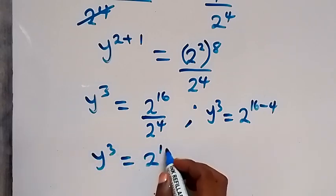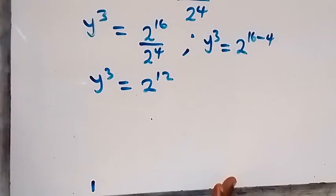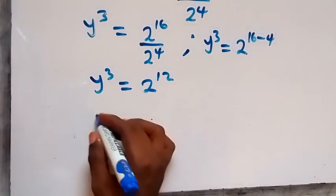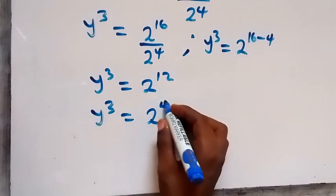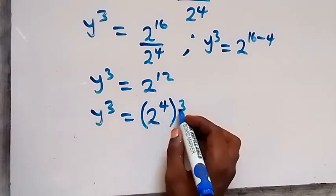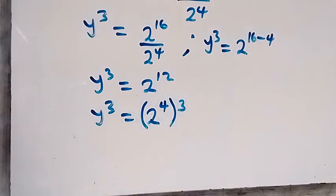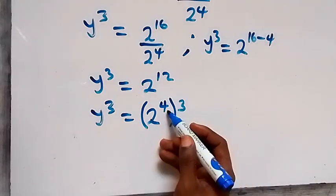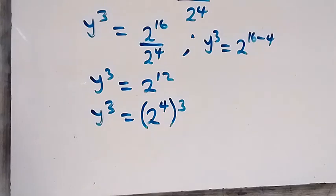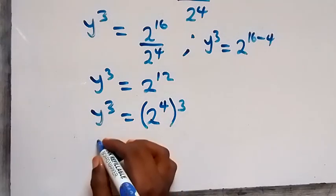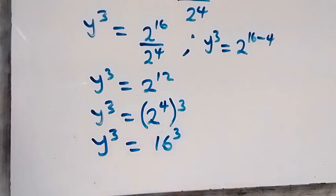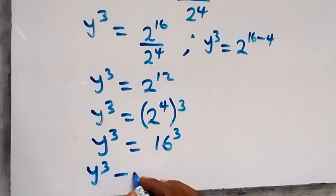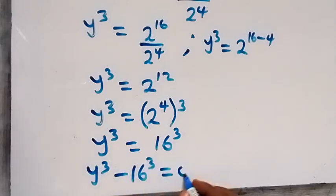We can also write this as y³ equals 2 raised to power 4, raised to power 3, since 4 times 3 equals 12. And 2 raised to power 4 is 2 times 2 times 2 times 2 which is 16. So we write this as y³ equals 16 raised to power 3. Taking 16³ to this side, we have y³ minus 16³ equals 0.